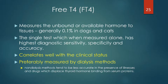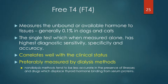Free T4 tends to correlate very well with clinical status, whether it be on the hypo or the hyperthyroid side or in the euthyroid state, and we prefer that it be measured by dialysis methods. Much of the data I'm going to discuss will try to convince you that if you can get access to this by dialysis method, as done by major diagnostic laboratories such as IDEXX or Antech, this would be the best possible route. Non-dialysis methods tend to be less accurate in the presence of illnesses and drugs, because there are things that alter the displacement of thyroid hormone from its binding proteins, and dialysis procedures can sort some of this out.